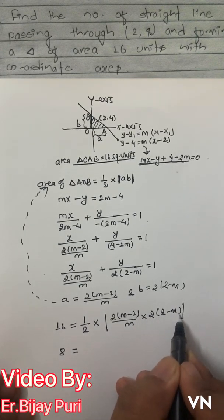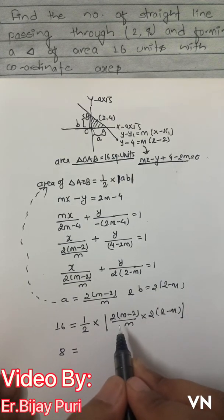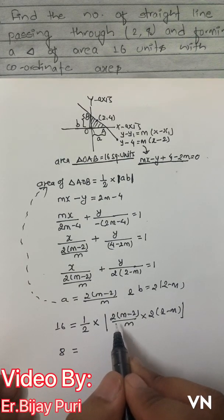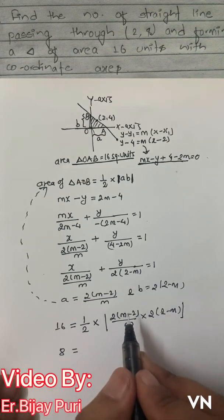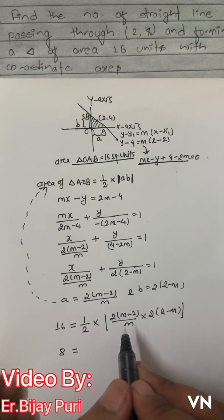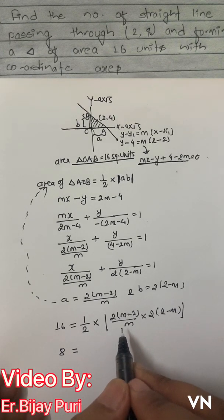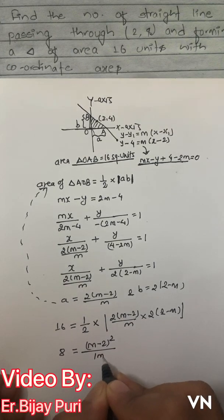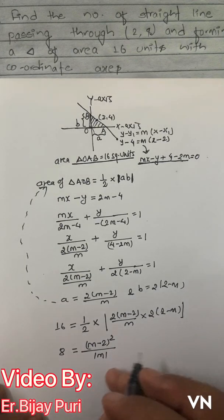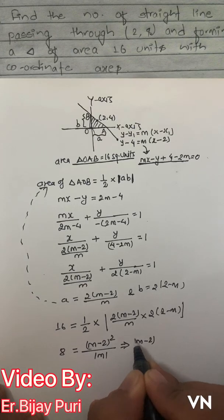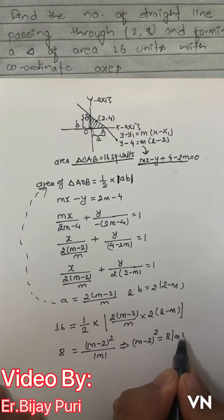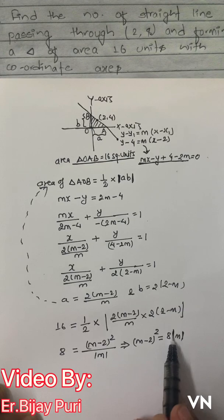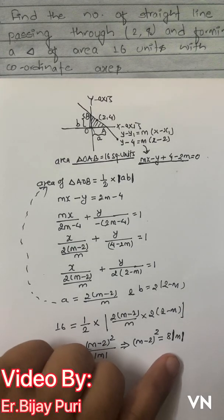Since (m−2)² is always non-negative, we can write the expression as |m−2|² / |m|, which simplifies to (m−2)² / |m|. So the equation becomes 8|m| = (m−2)², and modulus of m gives either +m or −m depending on the sign of m.